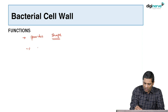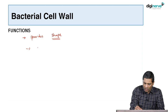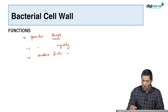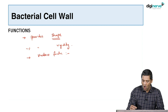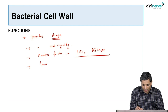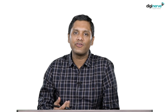The cell wall provides shape and rigidity to the bacteria. It also provides various other functions — there are various virulence factors present in the cell wall, for example lipopolysaccharide or the peptidoglycan layer. These act as virulence factors for the bacteria. Many bacterial cell wall components are immunogenic — when the organism infects the human body, the human immune response can be stimulated against the bacterial cell wall antigens.